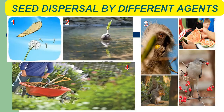Look at picture one. Some seeds are lighter and float in the wind. Wind helps the seeds to travel through the air, and the seeds land on and grow in new places. In picture two, some seeds float on water and travel to other places along the water current and start growing. In picture three, animals and birds eat fruits and throw the seeds on the ground, from where new sprouts come out.